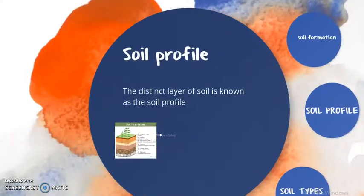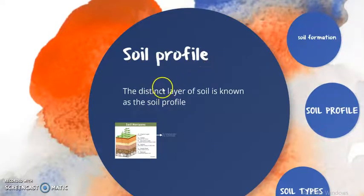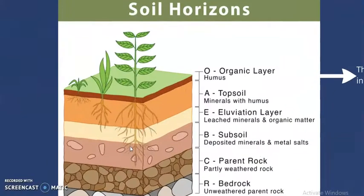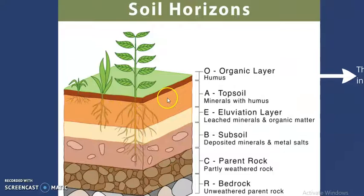Next, we have to learn about the soil profile. Soil profile refers to the different layers of the soil, which is known as the profile of the soil. When we dig the soil deeper, we can see different strata or different layers of soil, which can be identified by different colors and also by the different types of rocks found there.